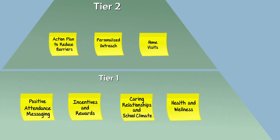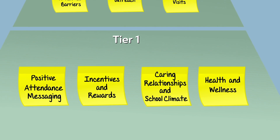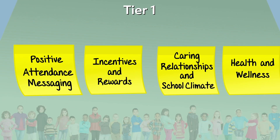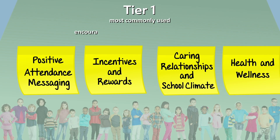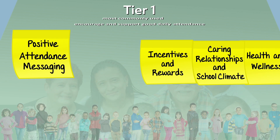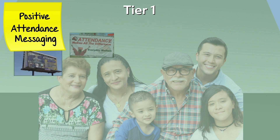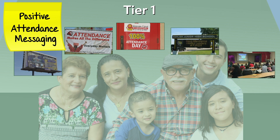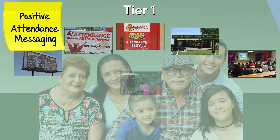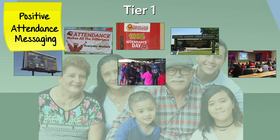The best way to reduce chronic absenteeism is through prevention. Tier 1 strategies are the most commonly used, and they encourage and support good daily attendance for all students. Conveying the importance of attendance helps everyone in the community better understand why being at school every day matters. In Kerman and Parlier, the districts use billboards, banners, posters, and school marquees, as well as kindergarten orientation and back-to-school events, and even superheroes to make the connection between attendance and achievement.